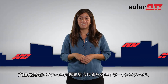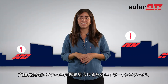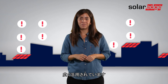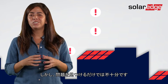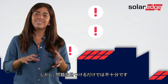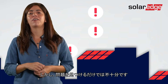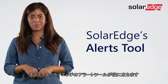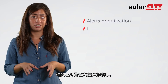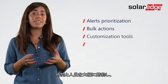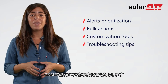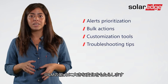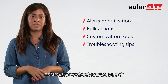PV installers like yourself rely on alerts to help track system issues across your PV fleet. But just knowing that there's an issue doesn't quite go far enough. This is why you need SolarEdge's Alerts tool — it offers far-reaching features that save you significant time and resources, making a big difference to your organization's O&M capabilities.